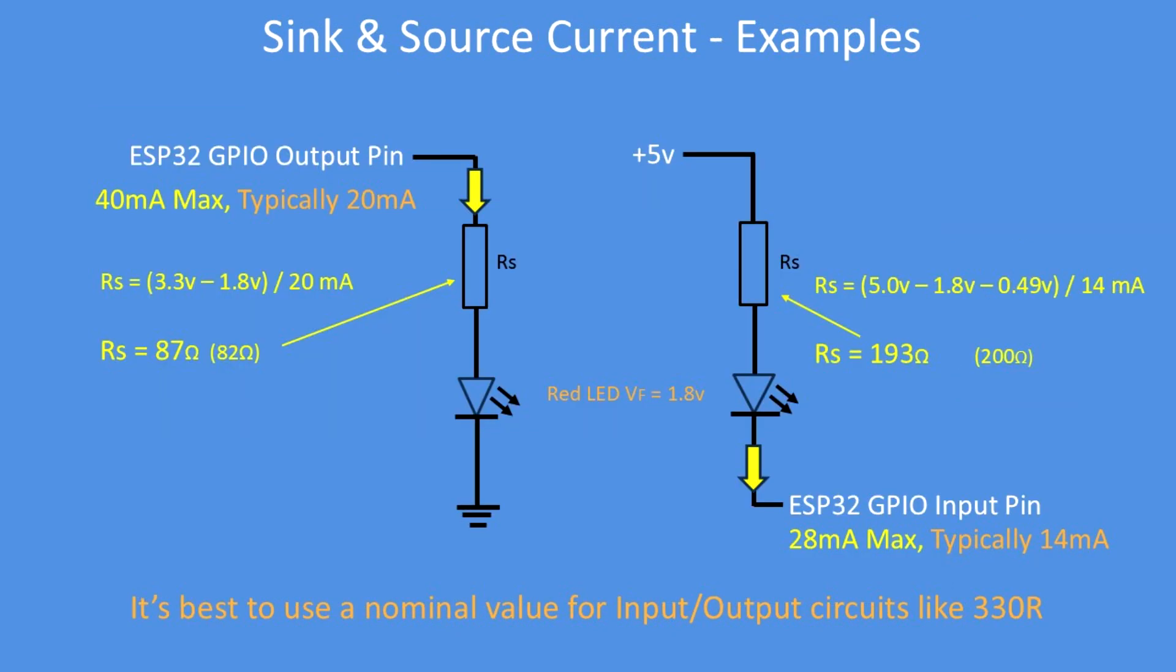When you make a connection to any device, any load, you have to be cognizant of the source or output current and the sink or input current limits. So here's a couple of examples. If you're driving an LED from a GPIO pin, you have to go through these calculations and work out the correct load resistor value.